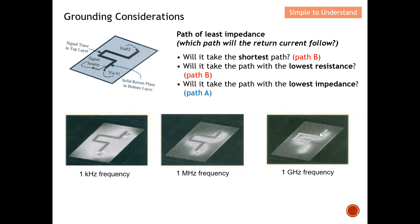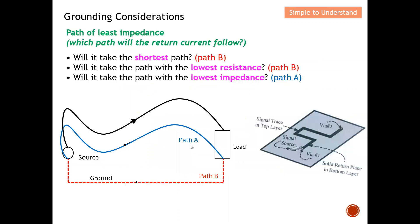If we further increase the frequency, the return current no longer follows the ground plane broadly. As shown in this simulation, it takes the path with the lowest impedance, which is Path A — returning directly below the signal trace. Later I'll discuss how the concept of an image plane can help minimize all these effects. With that, I'd like to end today's discussion. Please like and subscribe — sincere thanks for your strong support. See you guys soon, bye bye!